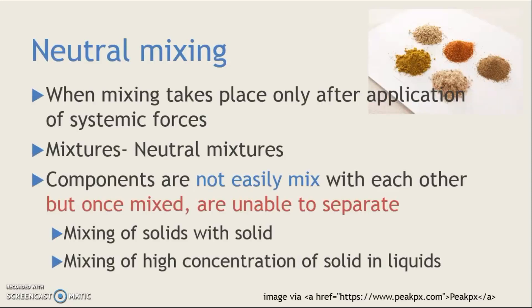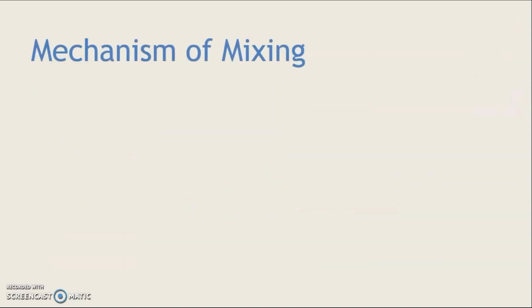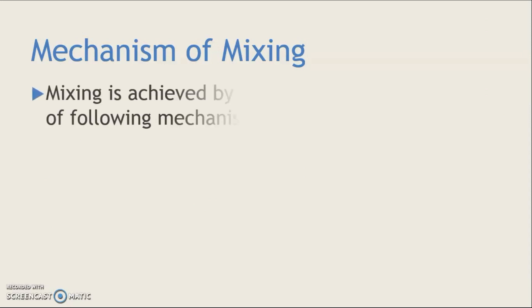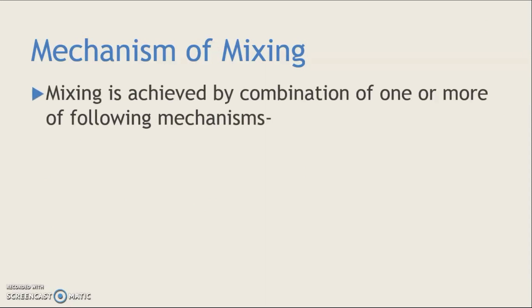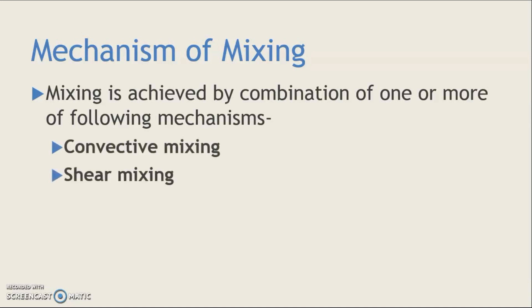Now we have to discuss the mechanisms involved in the mixing process. There are three mechanisms, and mixing is achieved by either one of these mechanisms or a combination of them. The three important mechanisms are: convection mixing, shear mixing, and diffusion mixing. We will discuss these one by one. In convection mixing, material is transported from one location to another.